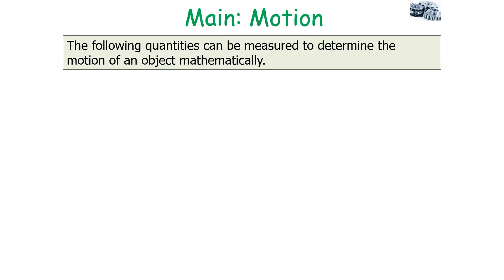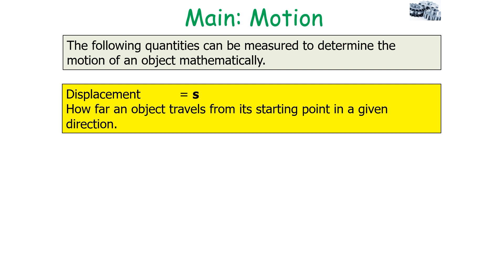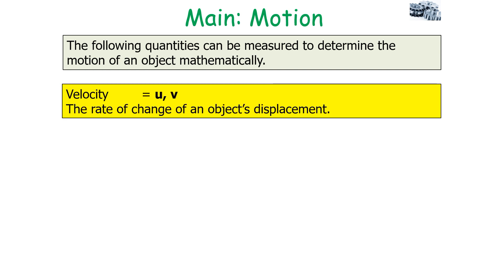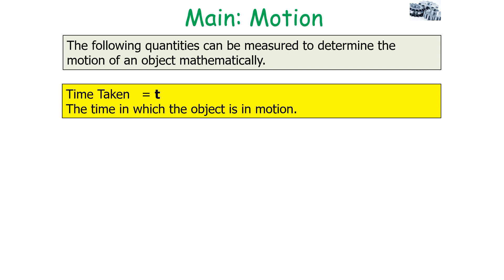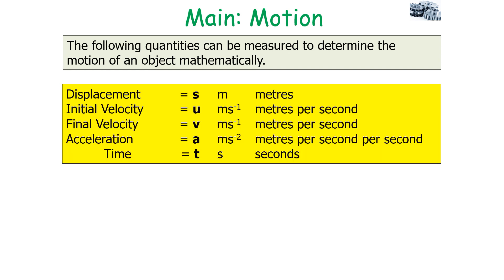The following quantities can be used to determine the motion of an object mathematically and can be measured experimentally. The first is displacement, symbol S, which is how far an object travels from its starting point in a given direction. You then have velocity — both initial, u, and final, v — which is the rate of change of an object's displacement. Then acceleration, symbol a, which is the rate of change of an object's velocity. And time taken, t, which is the time in which the object is in motion. So we have five quantities: displacement, initial velocity, final velocity, acceleration, and time.